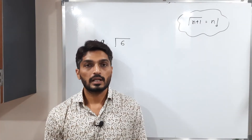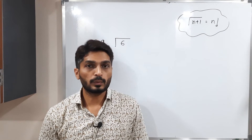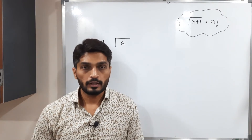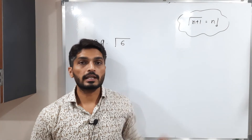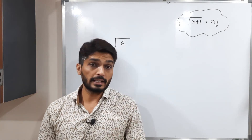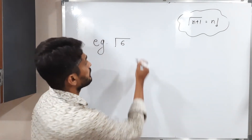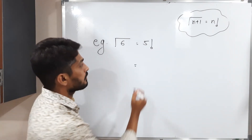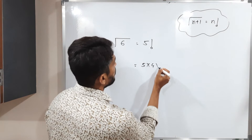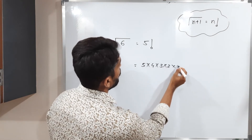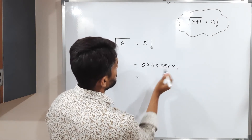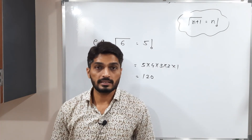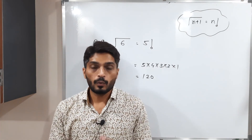Let us discuss one example. We want to find the value of γ(6). Since 6 is a natural number, by our result γ(6) = 5!. So 5! = 5×4×3×2×1 = 120. Therefore the value of γ(6) is 120.